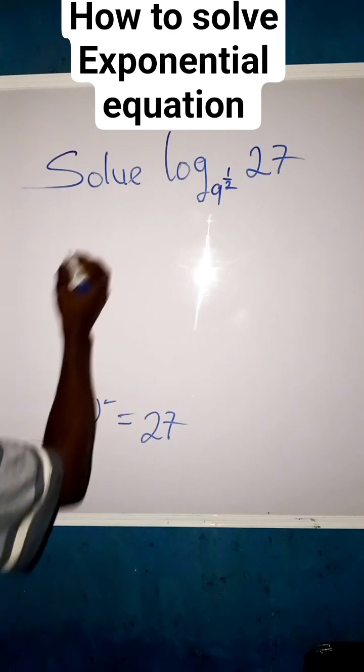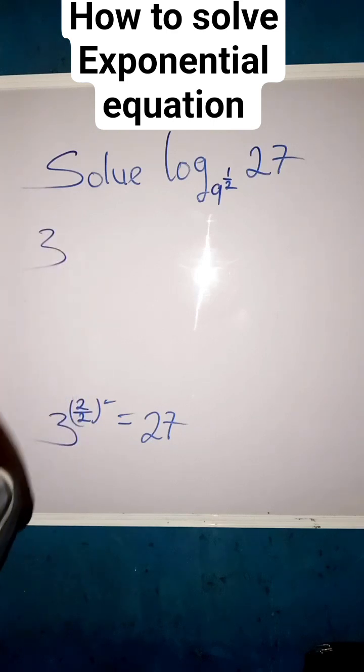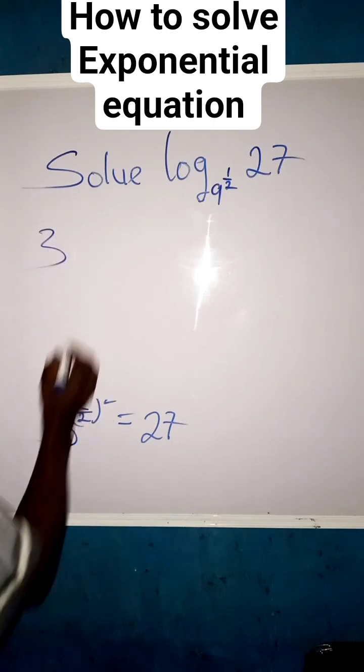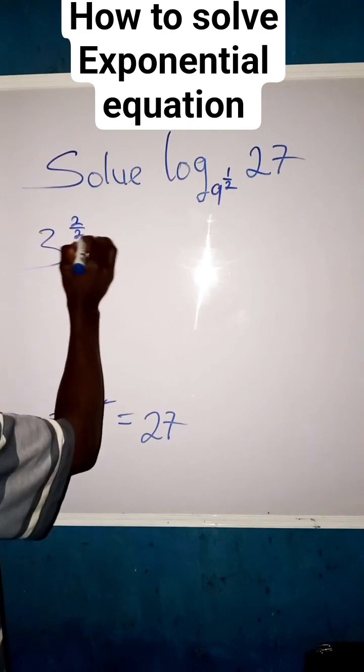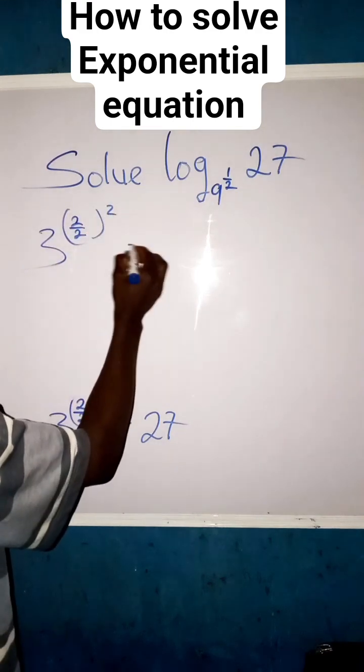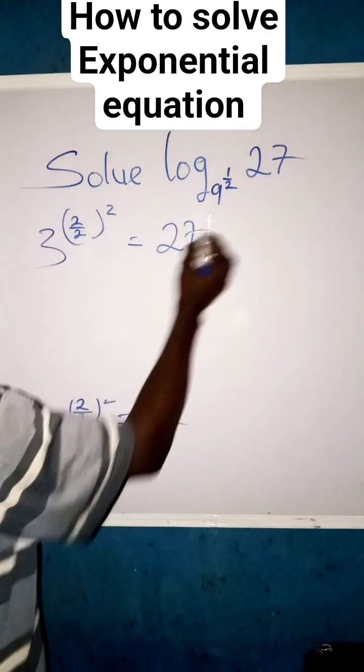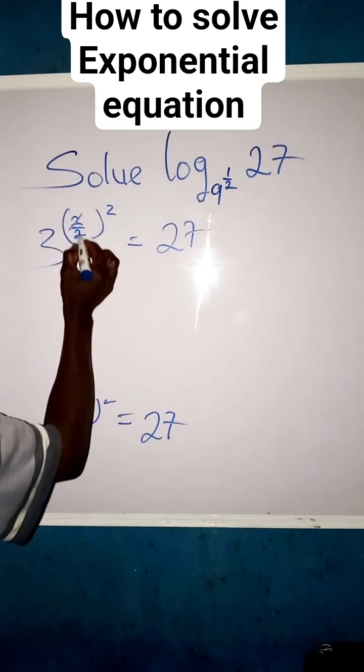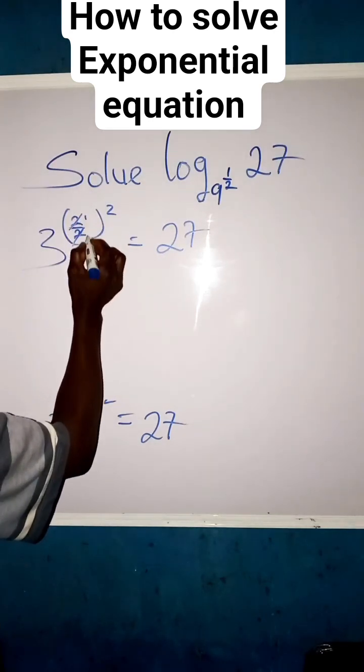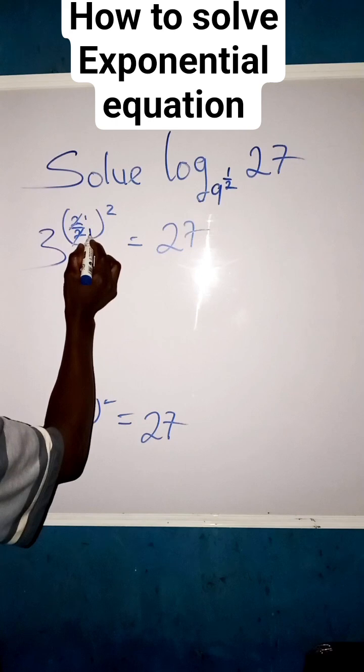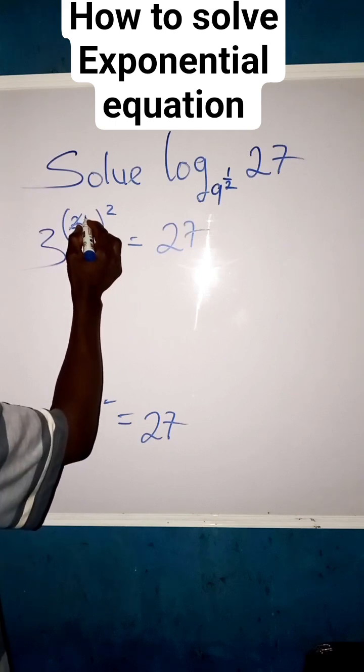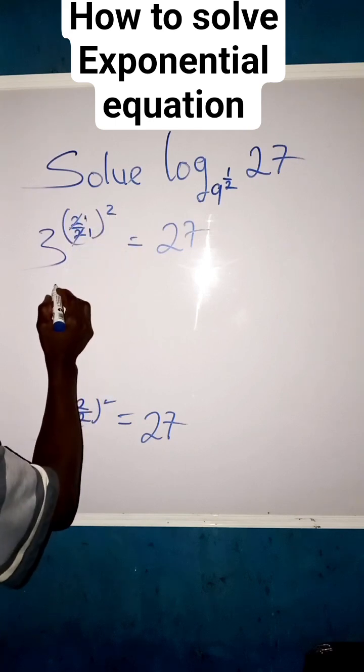Let us rewrite it. We have 3, then 2/2 times z equals to 27. We can see that this 2 can cancel this 2, so we have 1/1. 1 over 1 is 1, so now this 1z will give us z.